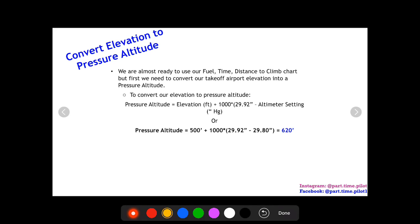So we need to convert our elevation to a pressure altitude. To do that, we're going to use the following equation: the pressure altitude equals the elevation plus 1000 times the quantity of 29.92 inches of mercury minus the altimeter setting. So 29.92 is a standard day altimeter setting minus the actual altimeter setting.